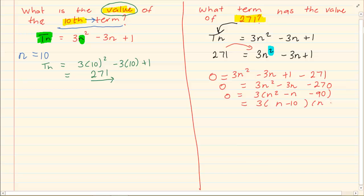Now after this you can either use your calculator or you can use the bracket method. It doesn't matter which method you use but you have to factorize. So we have n minus 10 is equal to 0 and we have n plus 9 is equal to 0. So our final answer is n is equal to 10 or n is equal to minus 9.